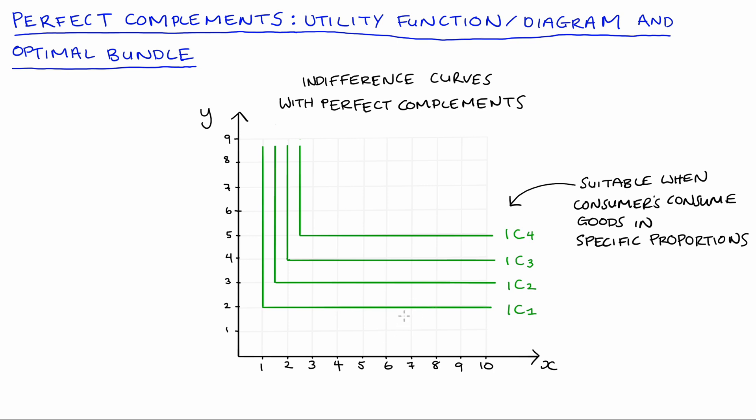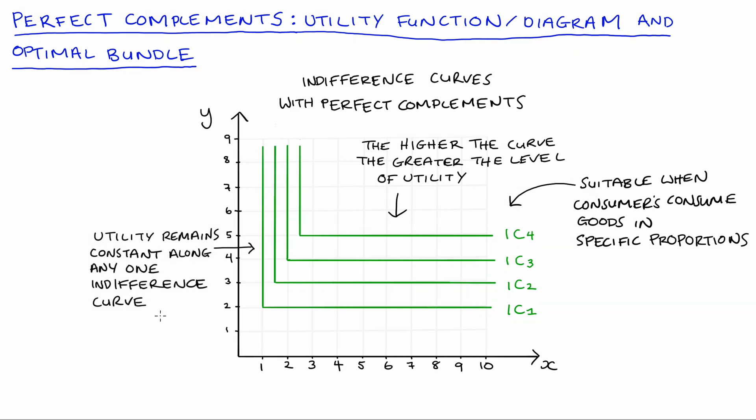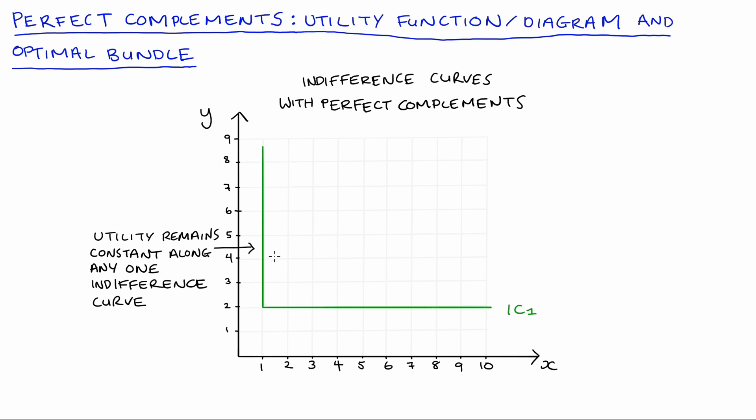Like usual each indifference curve corresponds to a different level of utility. The higher the indifference curve the higher the utility obtained and the bundles along each curve all correspond to the same level of utility. So utility remains constant along each individual indifference curve. So at each point along this curve, for instance I'll just focus on IC1 indifference curve 1. If we went from a point like A for instance where we're consuming 1x and 2y and we moved to point B where x is still 1 but now y equals 4, our consumer would get exactly the same level of utility from either bundle because we are on the same indifference curve.